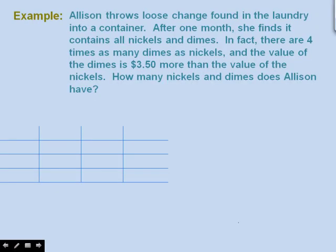Let's do another example. Allison throws loose change from the laundry into a container. After one month it contains only nickels and dimes. There are four times as many dimes as nickels, and the value of the dimes is $3.50 more than the value of the nickels. How many nickels and dimes does Allison have? Let X be the number of nickels and Y be the number of dimes.